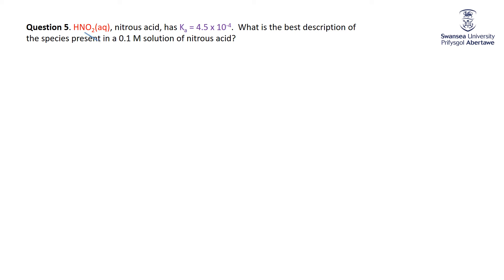But anyway, we know that it's a weak acid because we're told its Ka value, 4 times 10 to the minus 4. So that means that it is going to partially dissociate into H-plus and, of course, its conjugate base, NO2 minus.